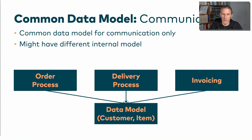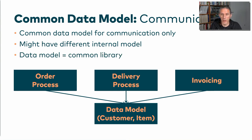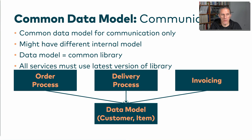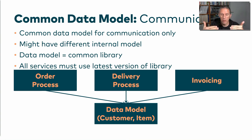That's the first decision and it seems kind of sound. The next decision is: there is this common data model — why would we implement it for each of these microservices? So we build a common library that implements that data model, which also seems like a wise decision. But now all of these services need the latest version of that library. So if we have a new version of the common data model, we have a new version of the library, and we will need to update each of these microservices.